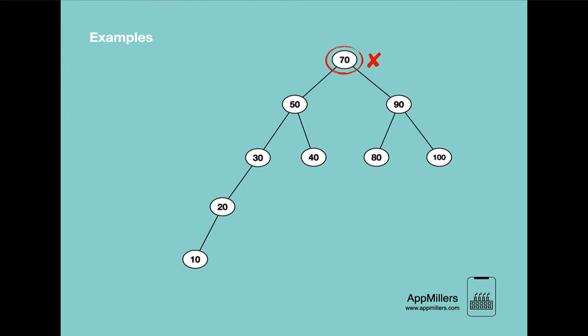In the next example, when we calculate the left and right subtree heights, the left subtree's height is 4 and the right subtree's height is 2, and the difference between them is 2. This means this tree is not balanced, so it is not an AVL tree. However, by doing a rotation we can make this binary search tree an AVL tree. In the next lecture, let's see why we need an AVL tree.